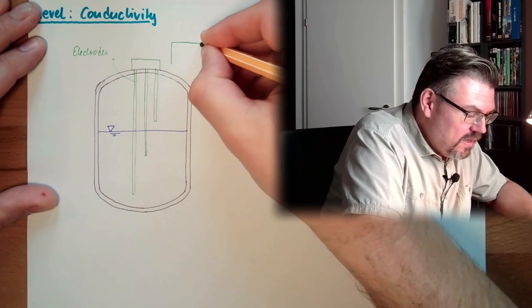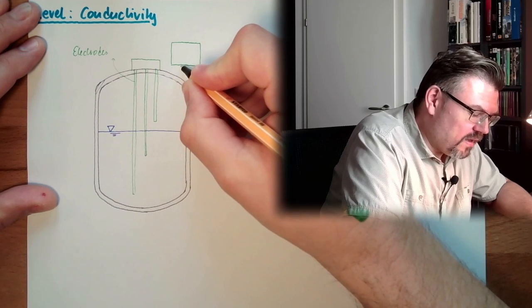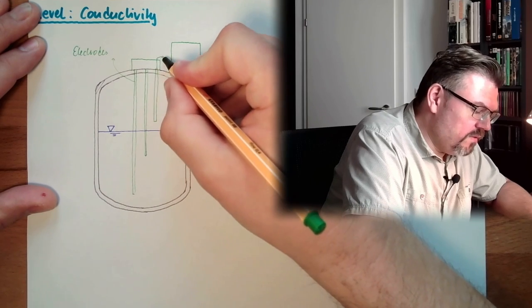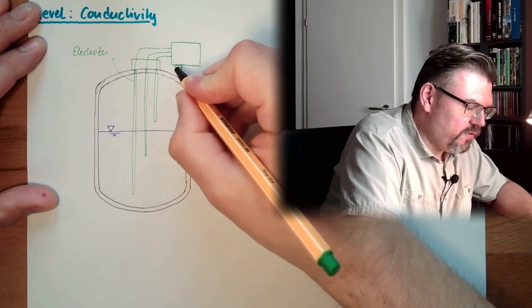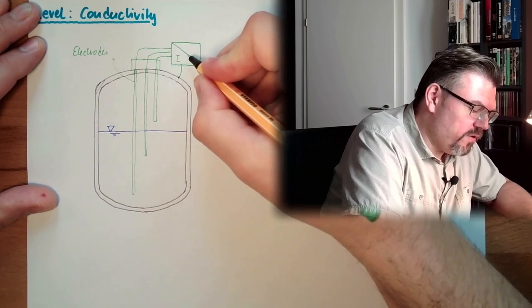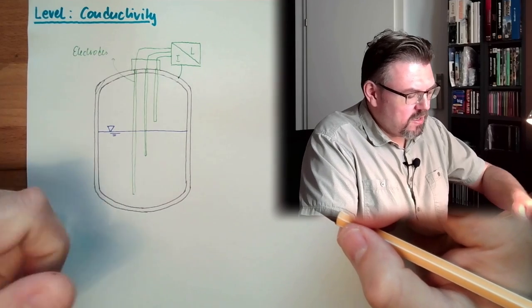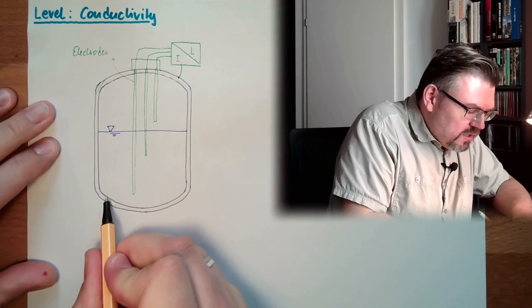And there would be even the possibility, if the wall of the tank is also conductive, then you could even use this. And this, for instance, would look like, so here we measure the current. If current is running, then we have the level. This for instance would check this level, this level, this level. This would be the switching levels.